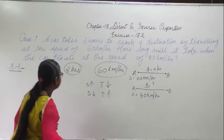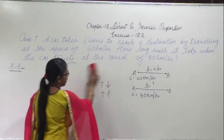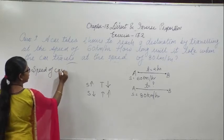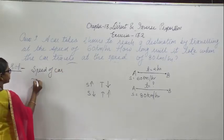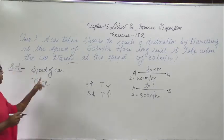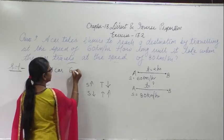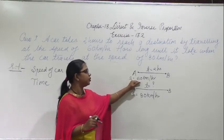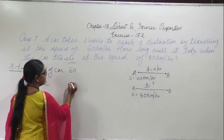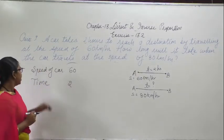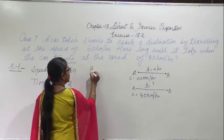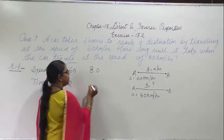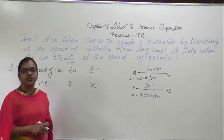So let's draw. Here the parameters given to you are speed of the car and time per hour. Speed is given as 60 km and the time taken to travel to the destination is 2 hours. When the speed of the car is 80 km, you have to find out the time. So let's suppose the time as x, as this is the condition of inverse proportion.